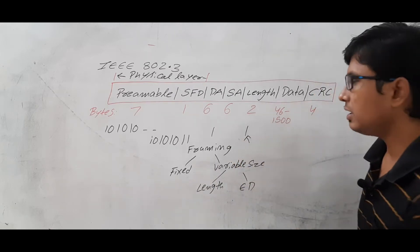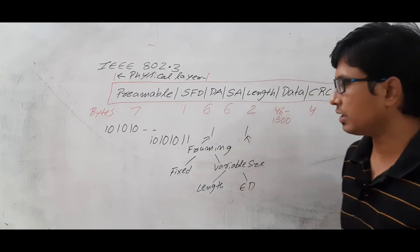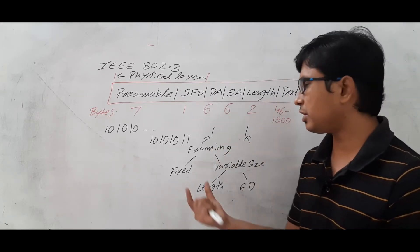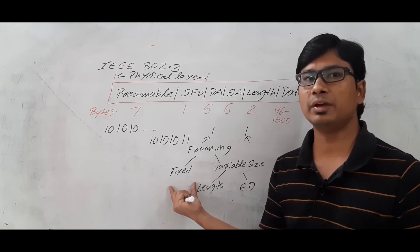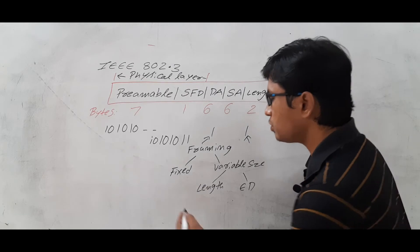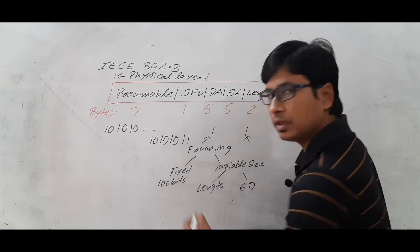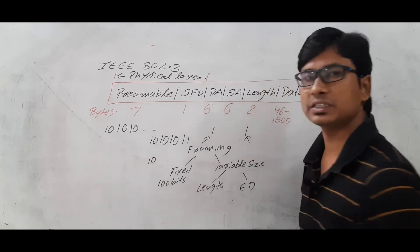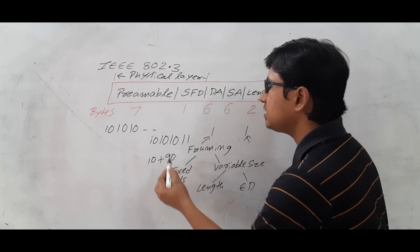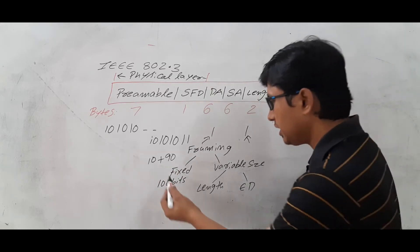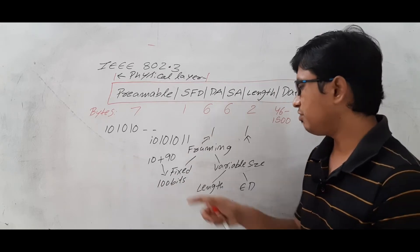The start frame delimiter and end delimiter tell you the boundaries — the starting and ending of the frame. When it comes to fixed framing, they have a fixed size. The drawback of fixed size is that if the fixed size is 100 bits but you only have 10 bits of information, you have to add another 90 dummy bits to make it a 100-bit frame. That is the drawback of fixed size framing.